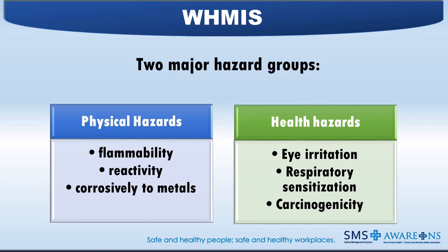WHMIS 2015 divides hazardous products into two major groups. Physical hazards, which are based on the physical or chemical properties of the product — such as flammability, reactivity, or how corrosive it is to metals. And health hazards, based on the ability of the product to cause health effects such as eye irritation, allergy, asthma symptoms or breathing difficulties, and carcinogenicity, which may cause cancer.